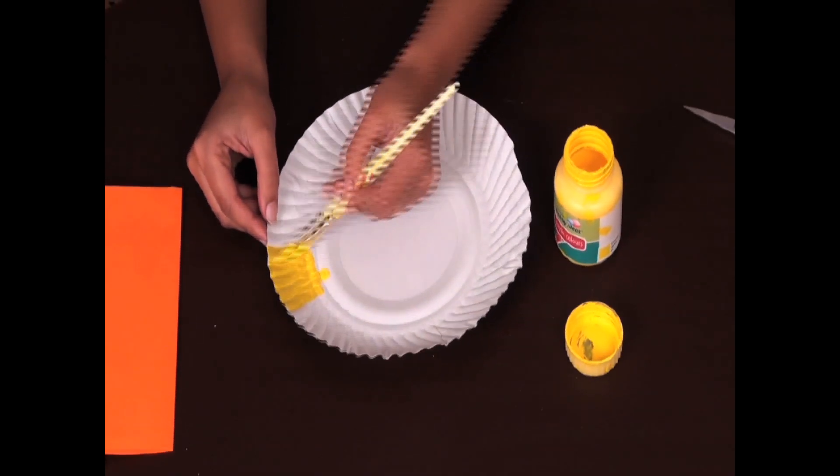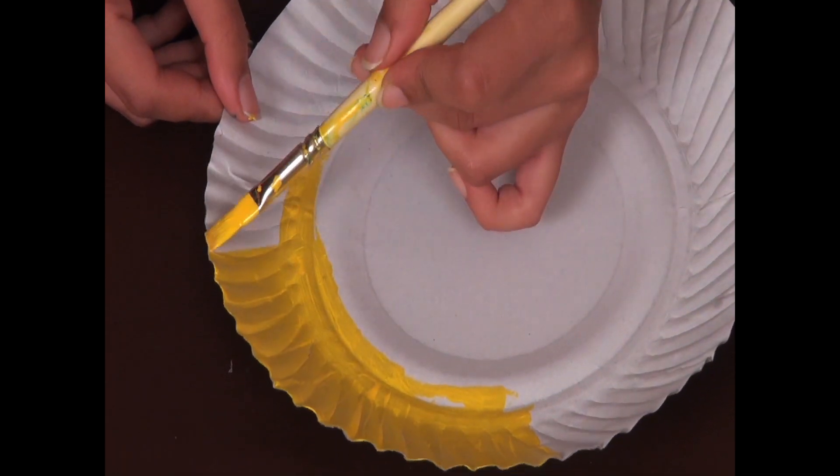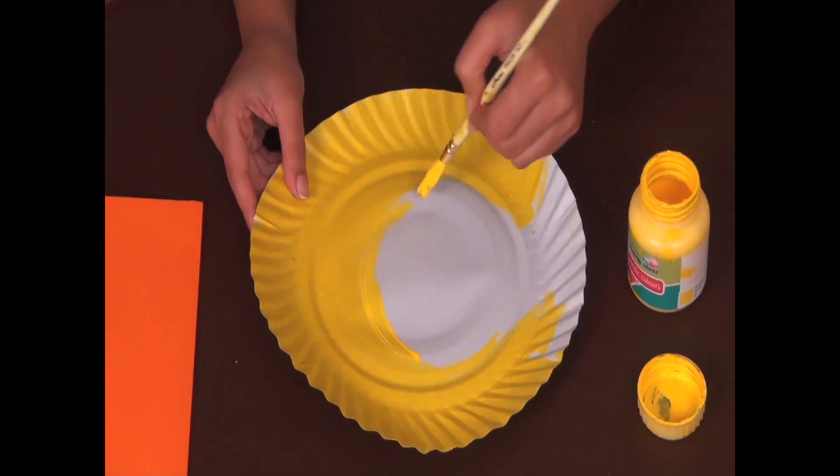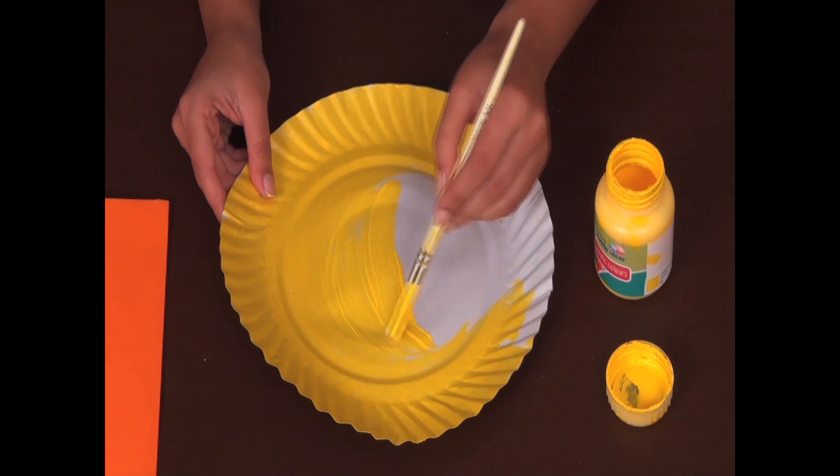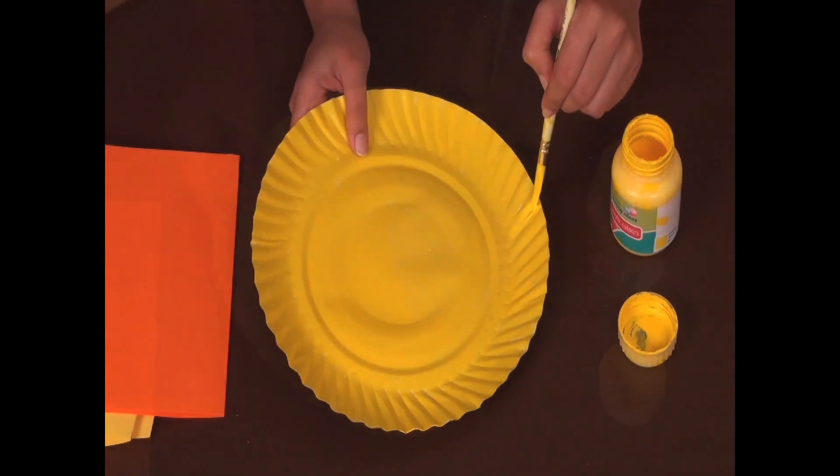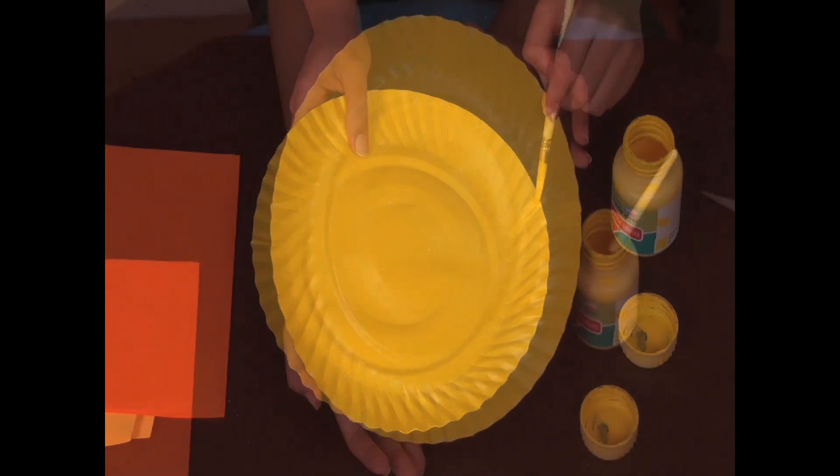As you can see, I'm not using any water to thin the paint, just straight out of the jar. Remember, thick paint and bold strokes. Make sure you cover all the white spaces, like this.